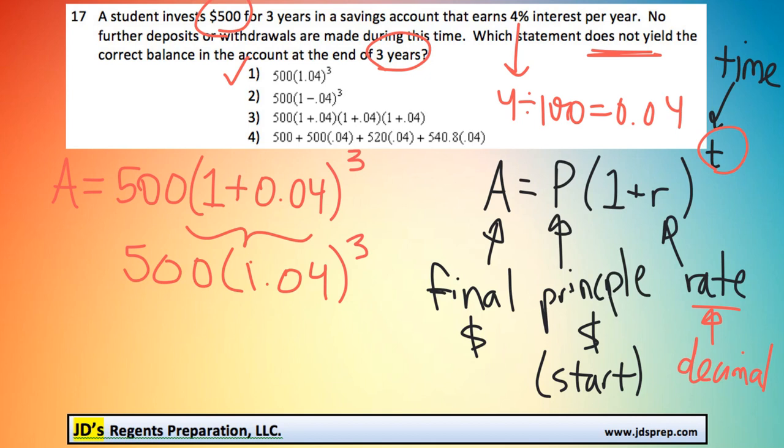Another way of looking at this original equation is that we're adding 1 plus 0.04 three times and multiplying them together. And you can see that is option number 3.